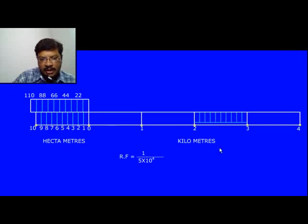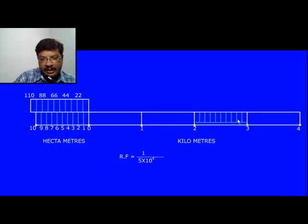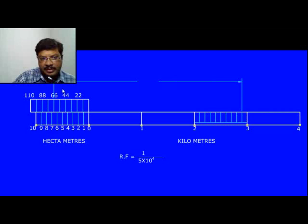Now to represent 3.56 km: 3.56 means 2.9 km plus 66 decameters. To get 2.9 km, divide the division between 2 and 3 — that is the 10-hectometer distance — into 10 parts, giving 2 kilometers and 9 hectometers, i.e., 2.9 km. Adding 66 decameters using the Vernier scale, the total sum is 3.56 kilometers.